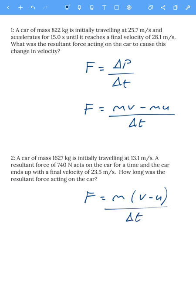Force is measured in newtons. Time is always in seconds. Mass is in kilograms. And the final speed, V, and the initial speed, or initial velocity, U, are always in meters per second.